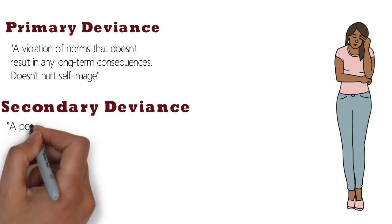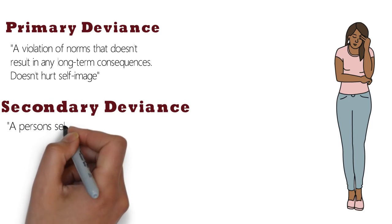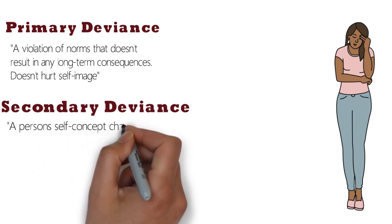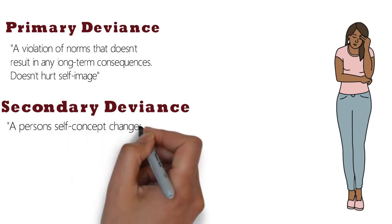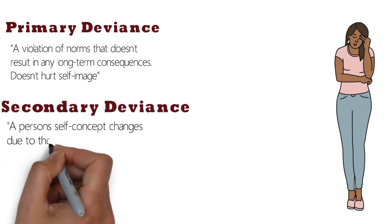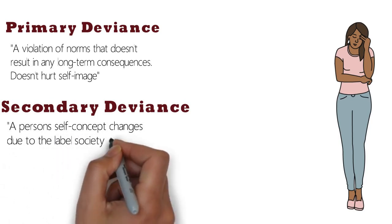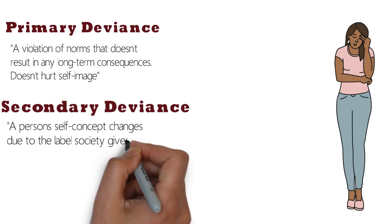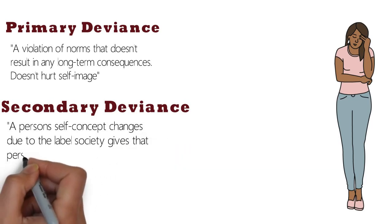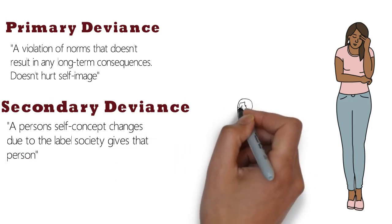If she continues to do it and is arrested, or even if society knows she continues to buy it but she's never caught, she very likely will receive a label as deviant. This is secondary deviance. This happens when a person's self-concept changes due to the label society gives that person.